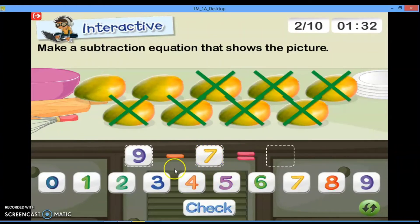Sisanya berapa teman-teman? Yang tidak diberi tanda silang? Kita hitung ya. One and two. Jadi, two mangoes. Kita check. Betul.